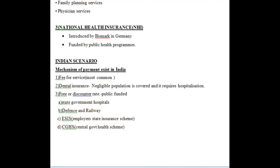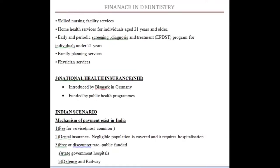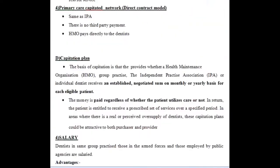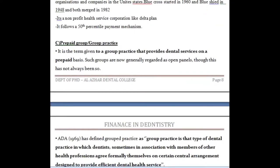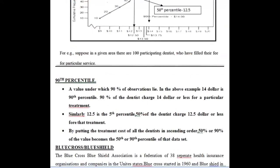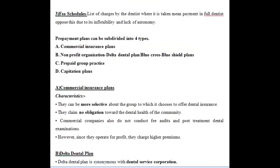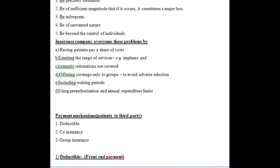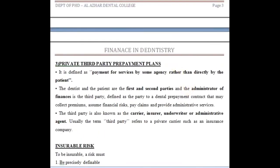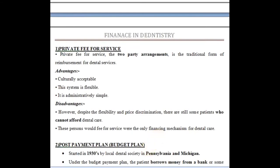In the Indian scenario, we have a very negligible amount of insurance. The most common plan is fee for service, dental insurance is negligible, and even if it exists it requires a hospitalized scenario. Free or discounted dental treatment is available from defense and railways, ESIS (Employee State Insurance Scheme), Central Government Health Scheme, and state government hospitals. So that's all about payment in dental care — mostly the questions asked are UCR mechanism, Delta Dental Plan, capitation plan, fee schedules, insurable risk, and budget payment plan.